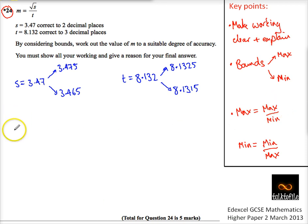So if we want to find the maximum value of m, so m max, I need to take the square root of s max and divide it by the smallest value, what I might call t min. And for me, that's therefore the square root of 3.475 divided by 8.1315. So I've taken the biggest value and I've taken the smallest value.